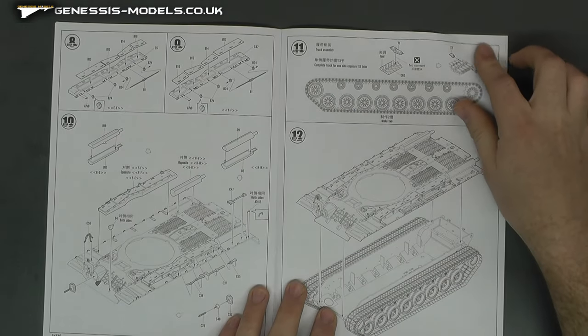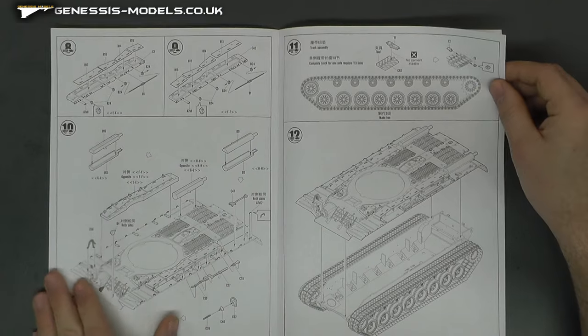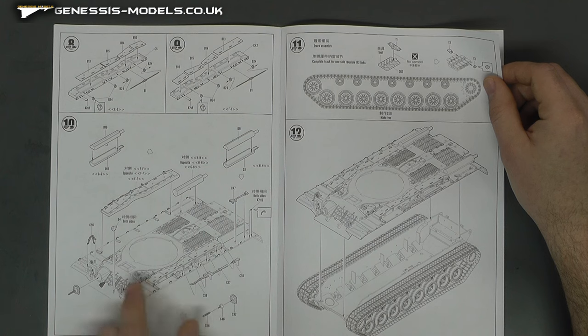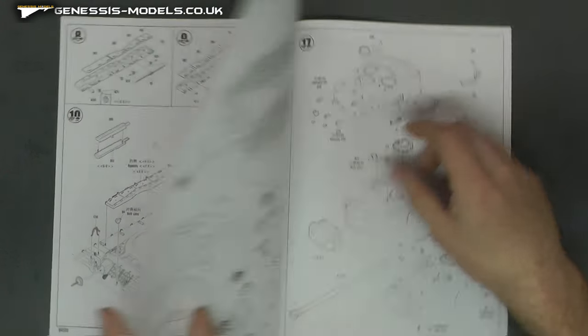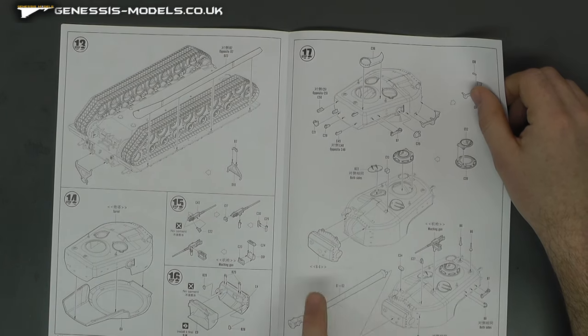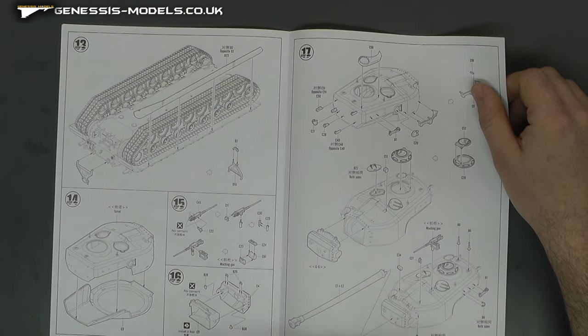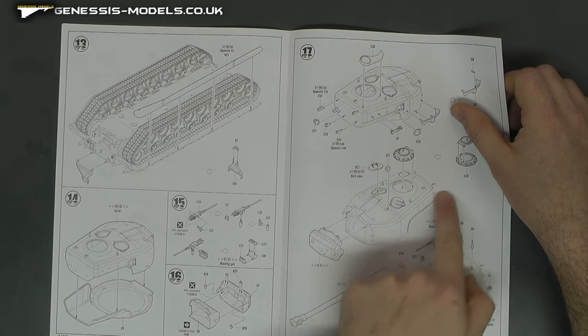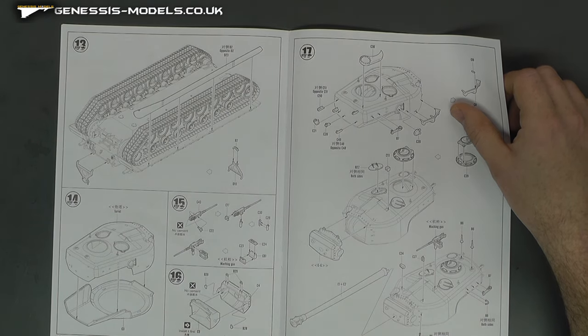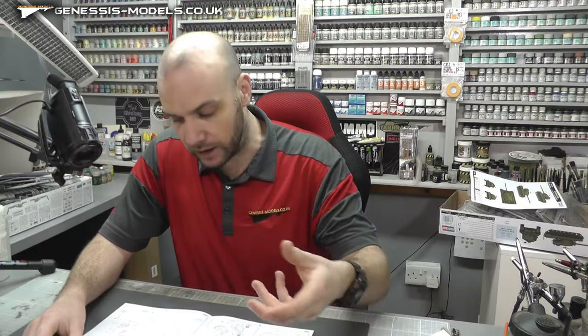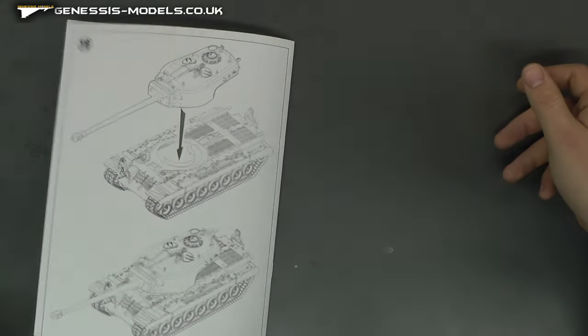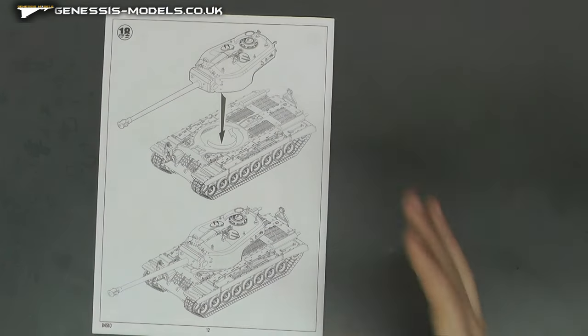And then, yeah, you know, you've got those track links. That's going to take you a while. But yeah, I mean, it does look pretty straightforward to put together. Doesn't look anything too difficult. The only thing, as I say, which might get a bit difficult is that seam line that runs around that turret, to kind of get rid of the seam line but then reapply the texture. That is probably going to be the hardest part of this kit.